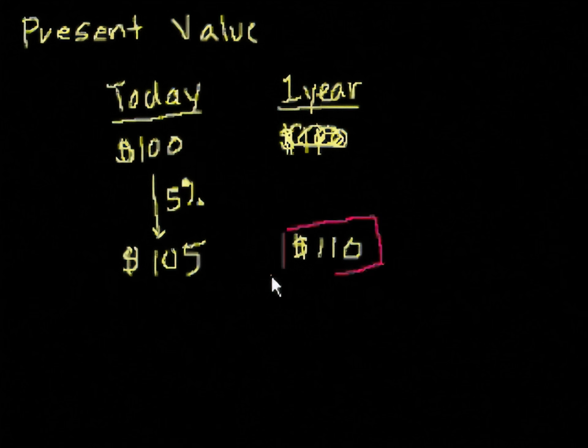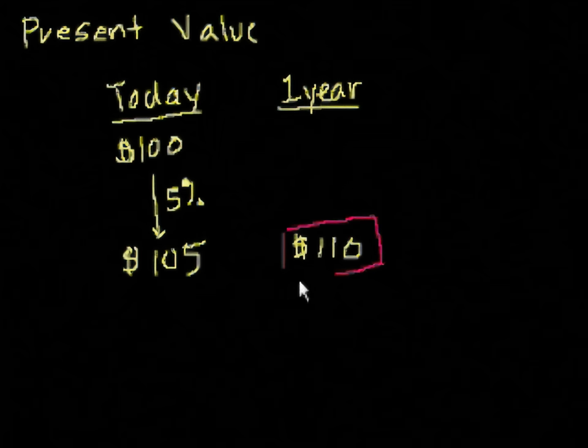And remember, I keep saying it over and over again, everything I'm talking about, it's critical that we're talking about risk-free. Once you introduce risk, then we have to start introducing different interest rates and probabilities. We'll get to that eventually, but I want to just give the purest example right now. So already you've made the decision, but we still don't know what present value was. To some degree, when you took this $100 and you said, if I lend it to the government at 5%, in a year they'll give me $105. This $105 is a way of saying, what is the one-year value of $100 today?